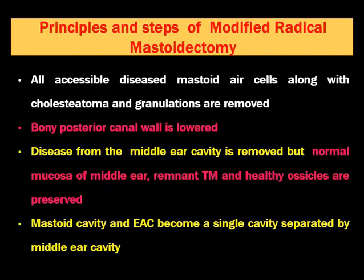What are the principles and steps of MRM? First, we perform cortical mastoidectomy surgery. Then we remove all the accessible diseased mastoid cells along with cholesteatoma and granulations, because CSOM atticoantral disease essentially includes ears having cholesteatoma and granulation tissue. Then the bony posterior canal wall is removed — the canal wall down technique — and disease from the middle ear cavity is also removed. But normal mucosa of the middle ear, tympanic membrane remnant, and healthy ossicles are preserved.